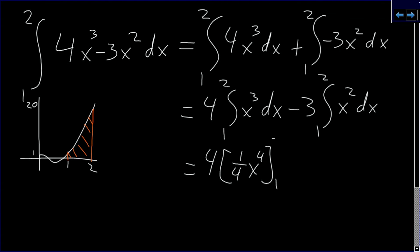between 1 and 2, minus 3 times 1 third x cubed between 1 and 2, which equals 4 times [16/4 minus 1/4] minus 3 times [8/3 minus 1/3], which equals 15 minus 7, equals 8.